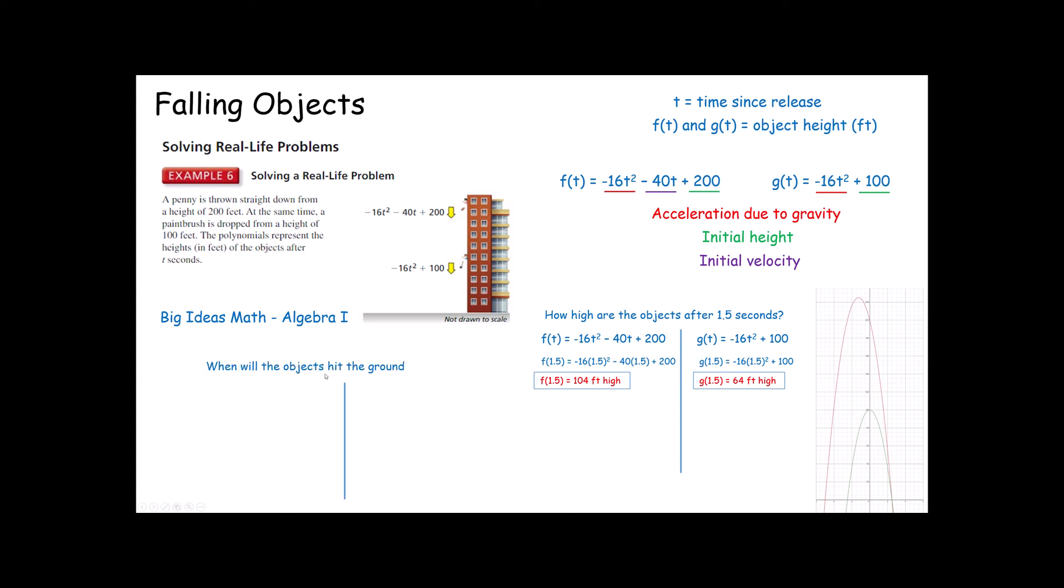The second thing you might be asked is, when will the objects hit the ground? Well, when the object hits the ground, we're talking about its height. How high above the ground is the ground? Well, it's zero feet above the ground. So I'm going to take both of these functions. I'm going to put a zero in for the height, or the f(t) and the g(t). Very important that you realize, first of all, that when it hits the ground, it's zero feet high. Second, it's important that you realize that that zero is the height, not the time. You now have two equations. Two equations. These are both in standard form, meaning they are in descending order by exponent. They cannot be solved in this form. Instead, we need to factor these equations.